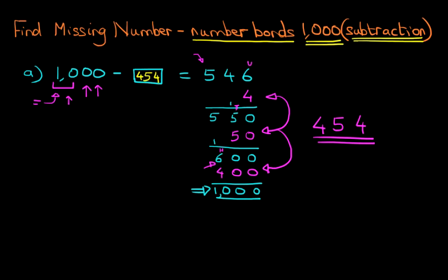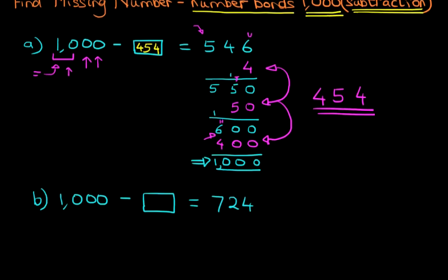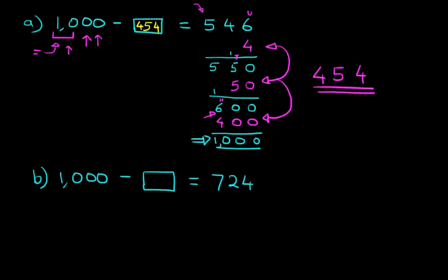Okay, we're going to look at a second example. This time, I'm going to do this rather quickly, and there is a reason for that. Let me just write the question down. We've got 1000 minus something equals 724. So the same principles as above, and I'm going to go through this quickly.